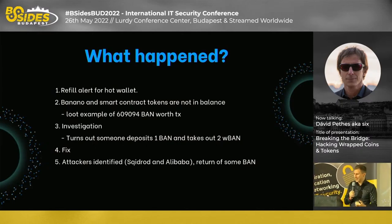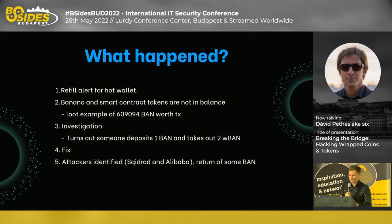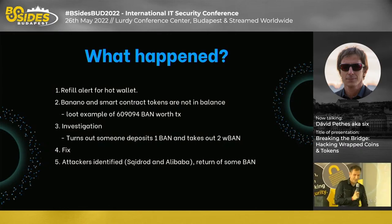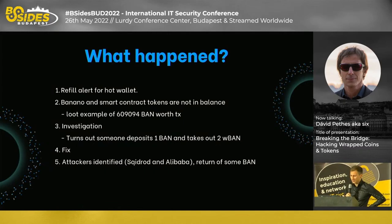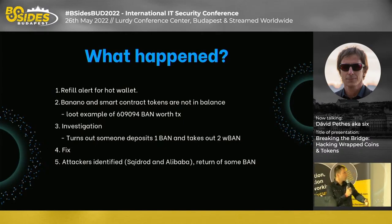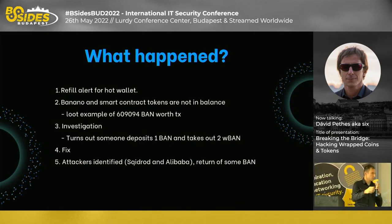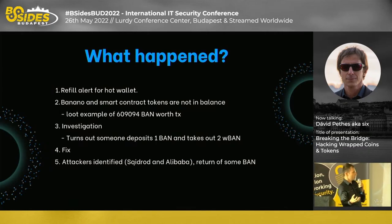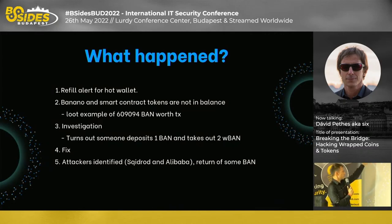In the end, two guys were found in the chat logs — Squidrod and Alibaba — who were asking what was going on, and their accounts were connected to the hack. It took some time until the team figured out what happened. You send one Banano to the bridge, use the receipt on both smart contracts, and you get two wrapped Bananas from one Banano. It also works the other way: when you have wrapped Bananas you can exchange them back to main chain Banano coins. That's pretty straightforward. But we still haven't looked at the code and what was happening on a technical level.